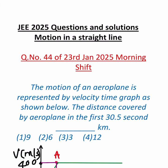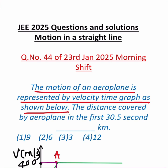The problem goes like this. The motion of an aeroplane is represented by velocity time graph as shown below. They have given the graph. The distance covered by aeroplane in the first 30.5 seconds is dash kilometers.